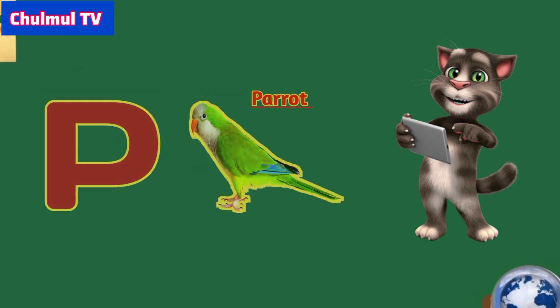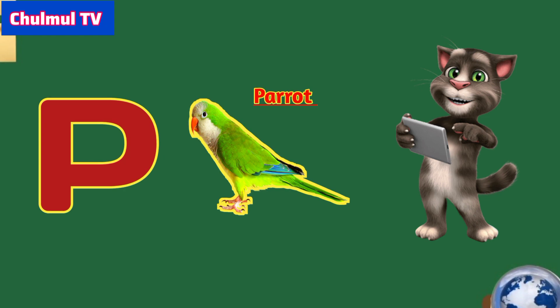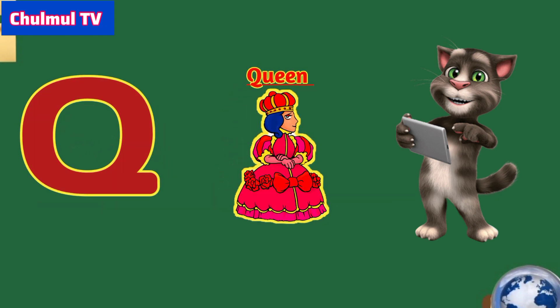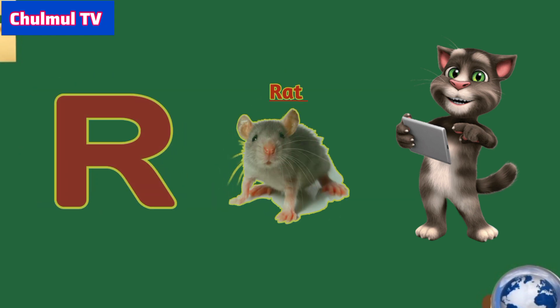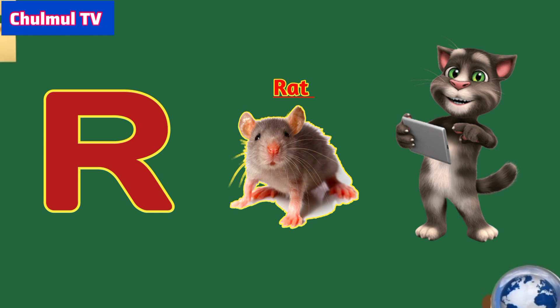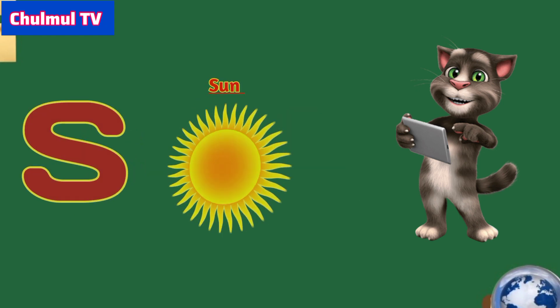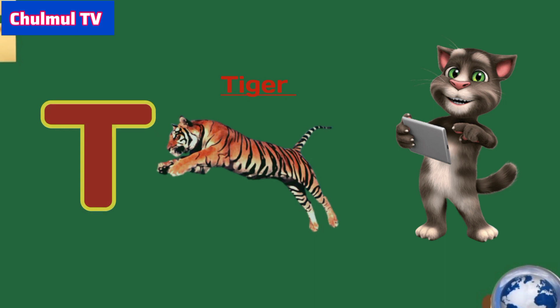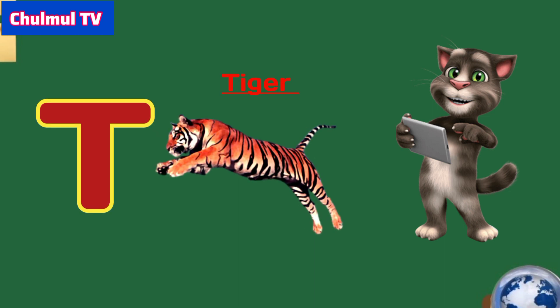B for parrot, Q for queen, O for red, S for sun, D for tiger.